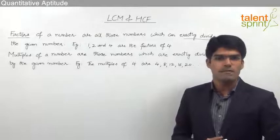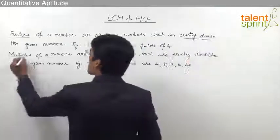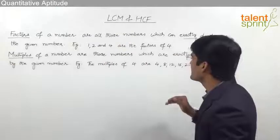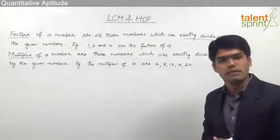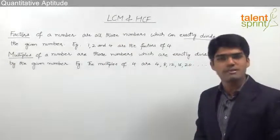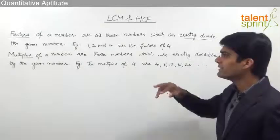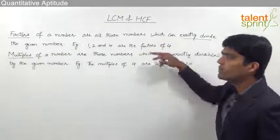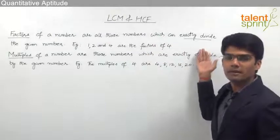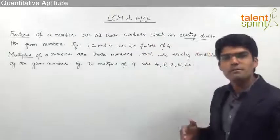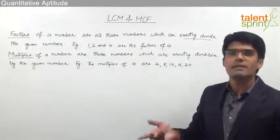Now let us see what is meant by multiples. Multiples of a number are those numbers which are exactly divisible by the given number. If you look at this, it is quite opposite to factors — factors are those numbers which can divide the given number, while multiples are those numbers which are exactly divisible by the given number.